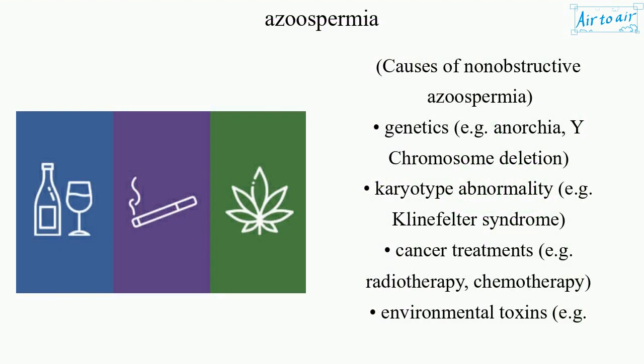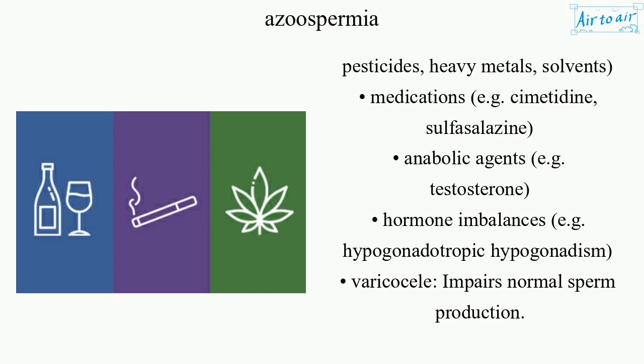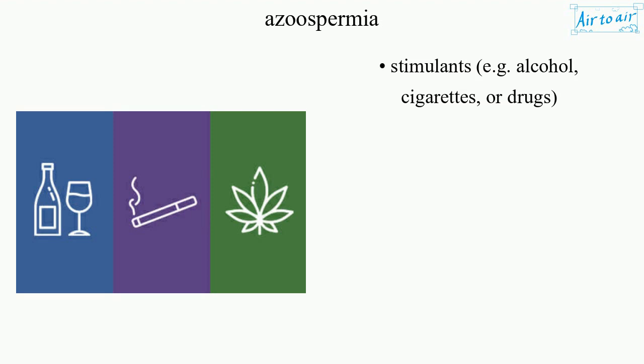Causes of non-obstructive azoospermia include genetics (e.g. anorchia, Y-chromosome deletion), karyotype abnormality (e.g. Klinefelter syndrome), cancer treatments (e.g. radiotherapy, chemotherapy), environmental toxins (e.g. pesticides, heavy metals, solvents), medications (e.g. cimetidine, sulfasalazine, anabolic agents such as testosterone), hormone imbalances (e.g. hypogonadotropic hypogonadism), varicocele which impairs normal sperm production, and stimulants such as alcohol, cigarettes, or drugs.